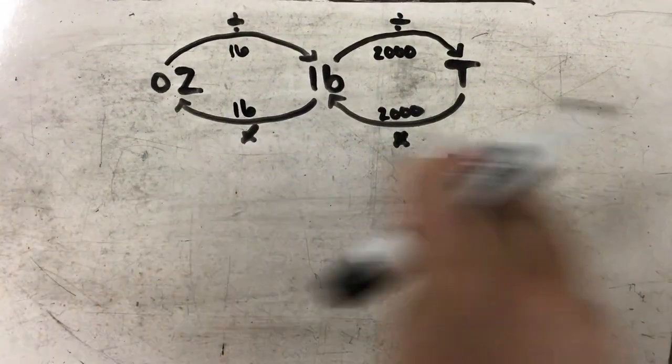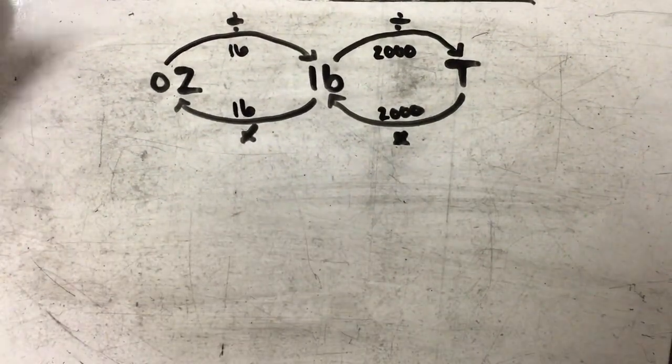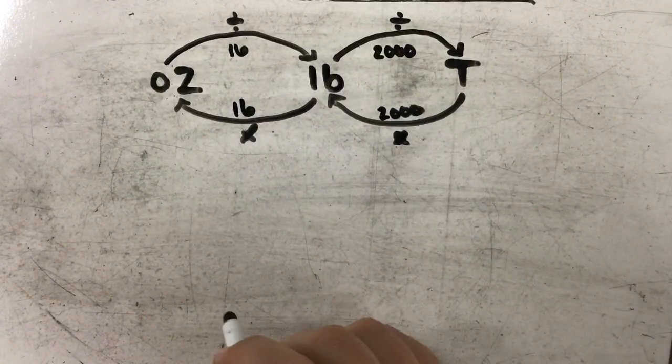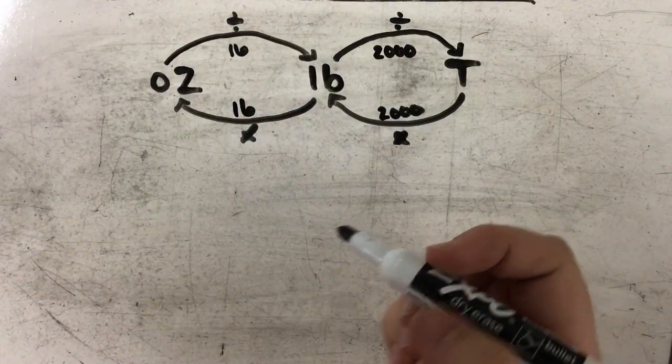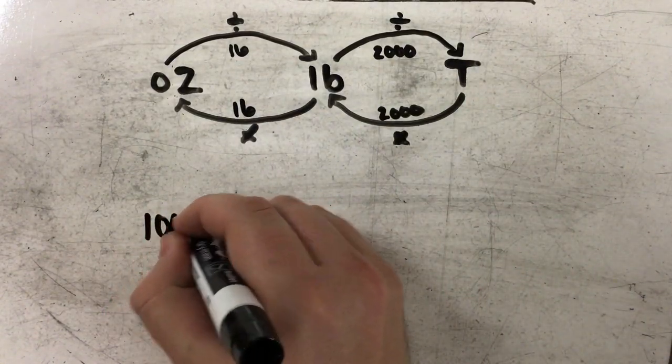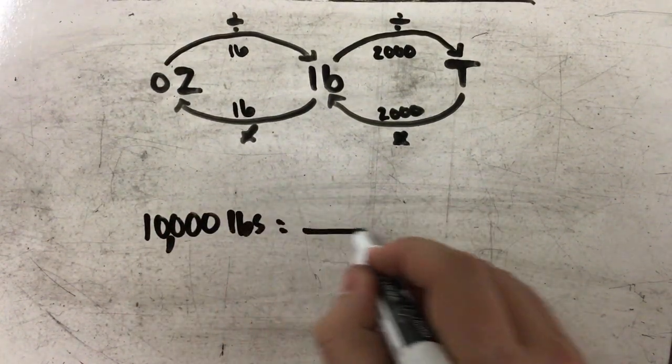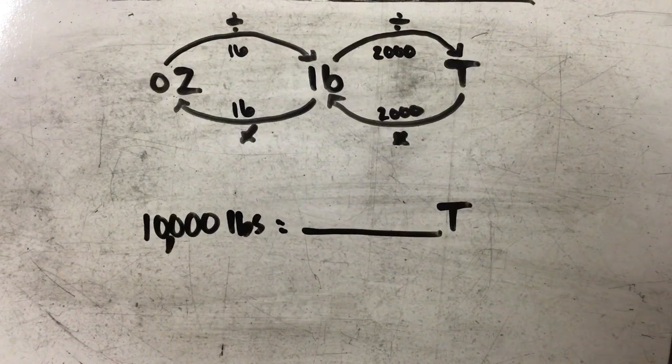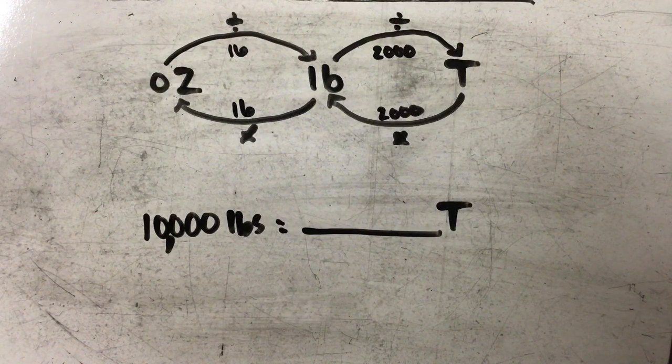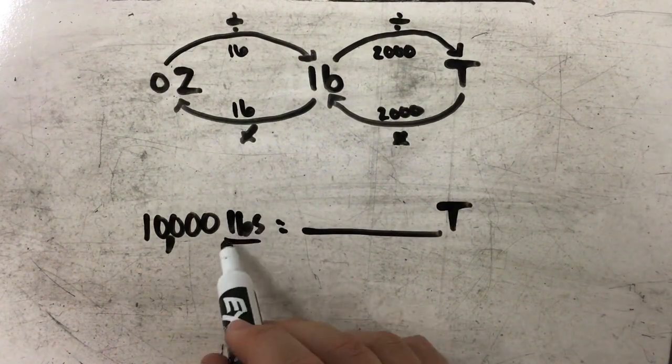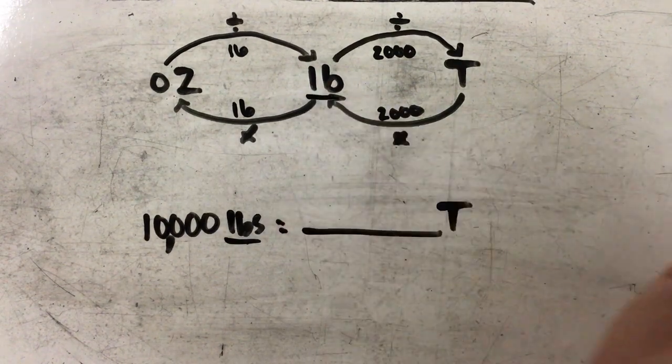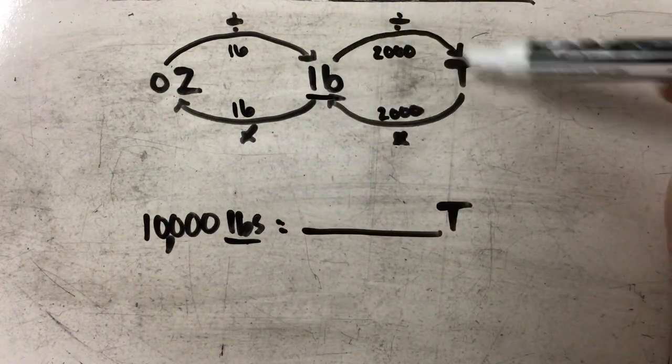So let's try another example. This time we'll go from a smaller unit to a larger unit. So let's say I have 10,000 pounds and I want to know how many tons that will be. So again, I'm going to start where I'm given. In this case, I'm given pounds, and I want to get to tons. So if I follow my arrow, I see that I need to divide by 2,000.